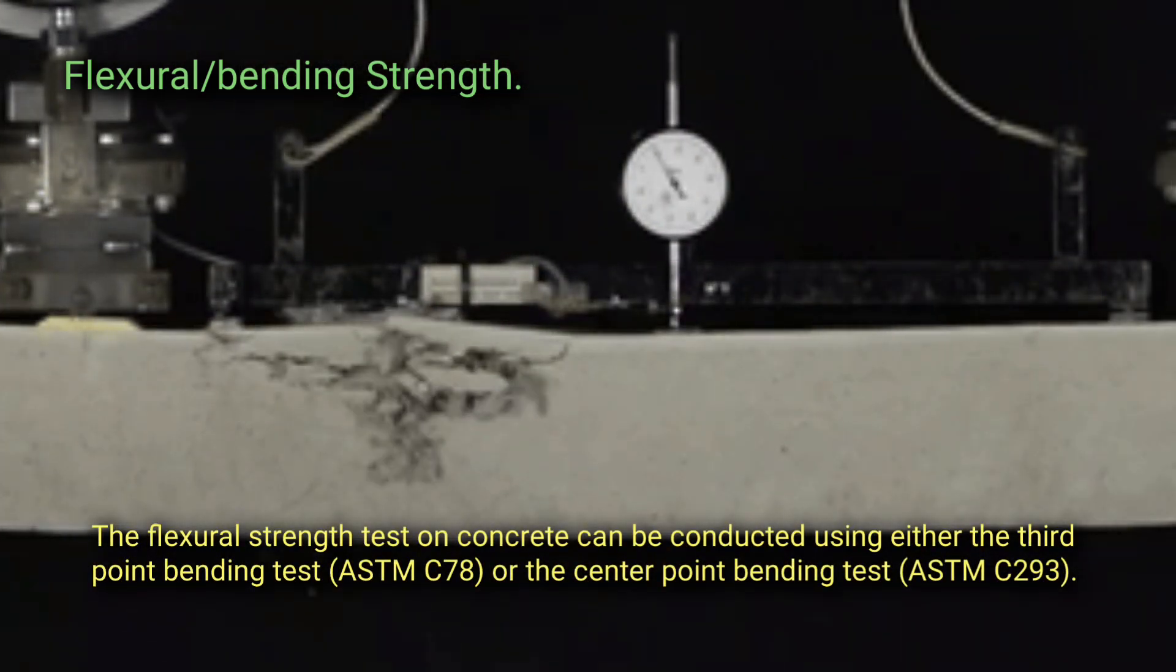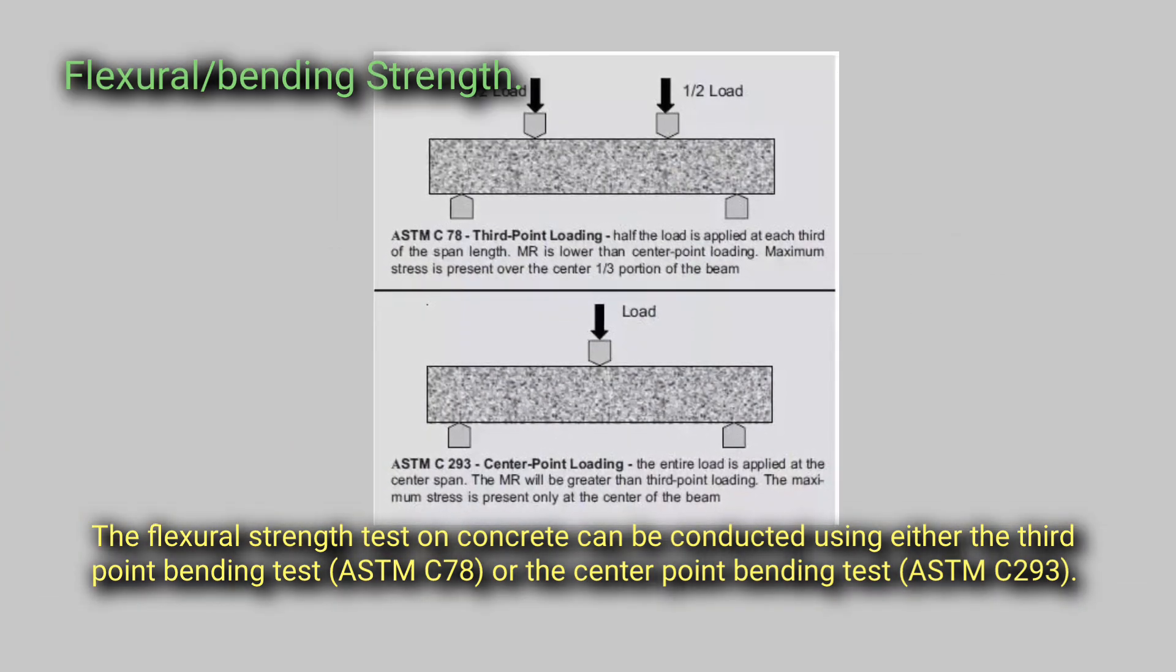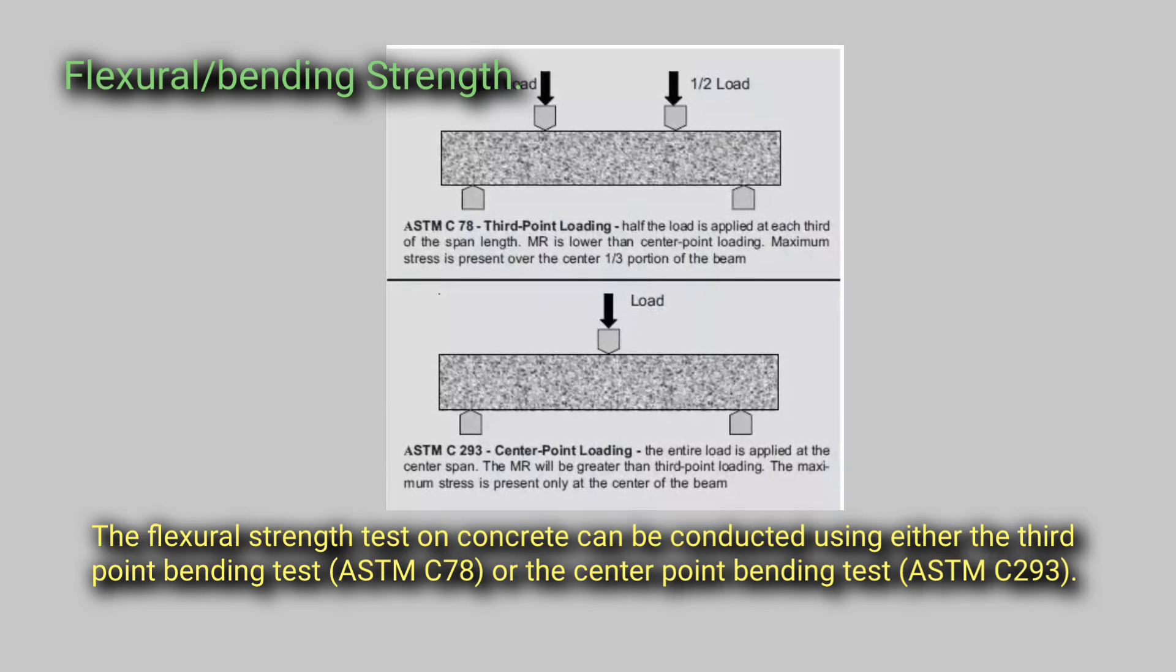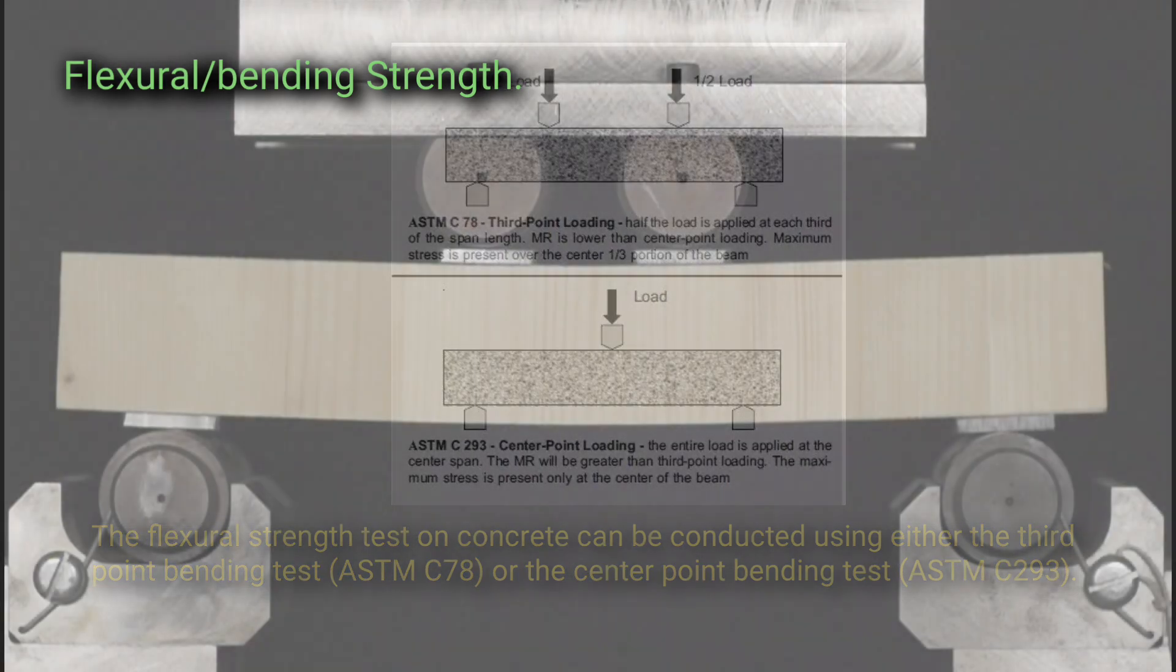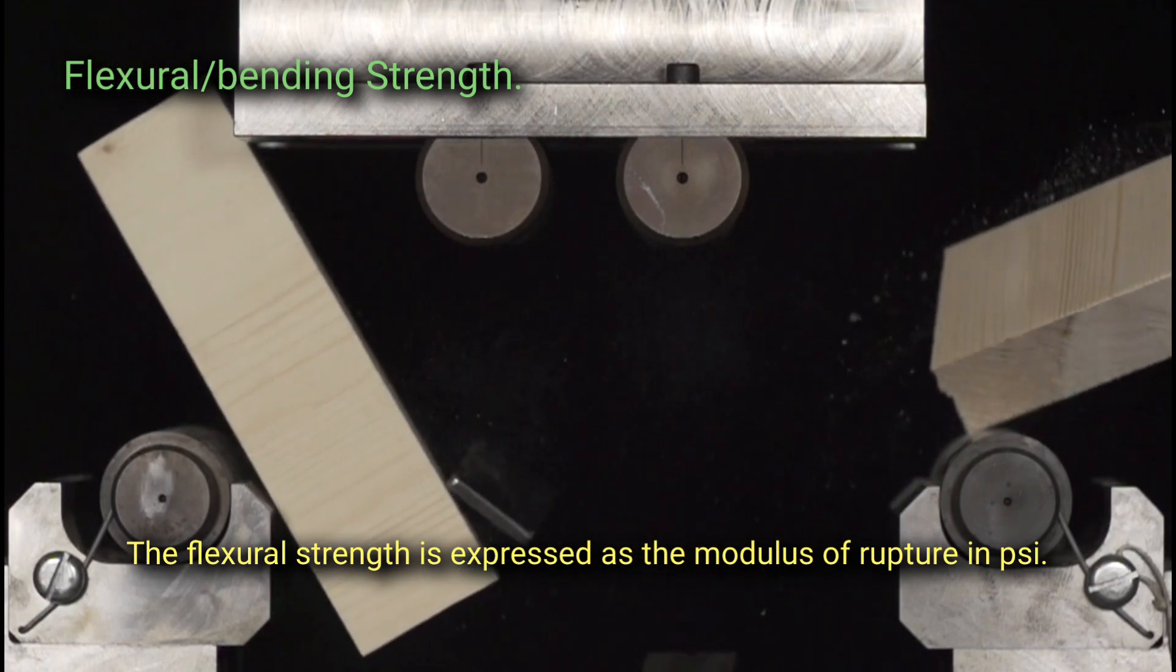The flexural strength test on concrete can be conducted using either third point bending test, ASTM C78, or center point bending test, ASTM C293. The flexural strength is expressed as the modulus of rupture in psi.